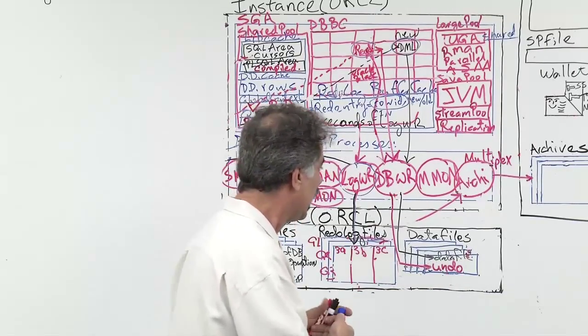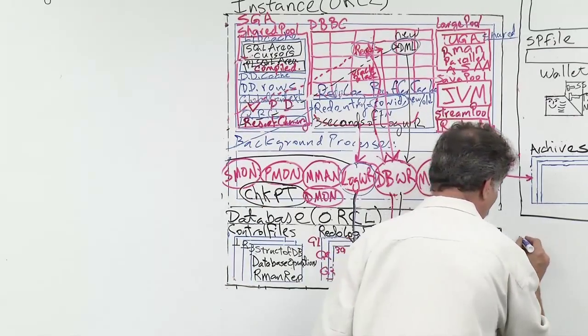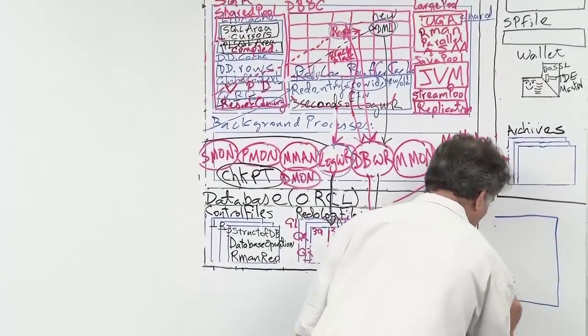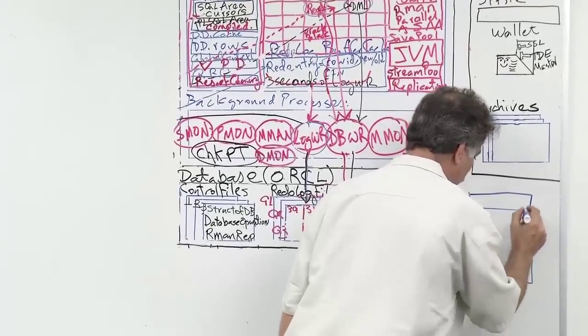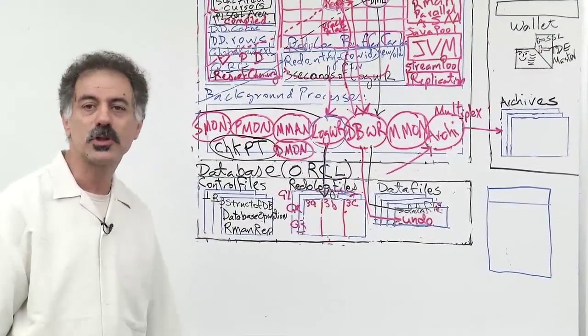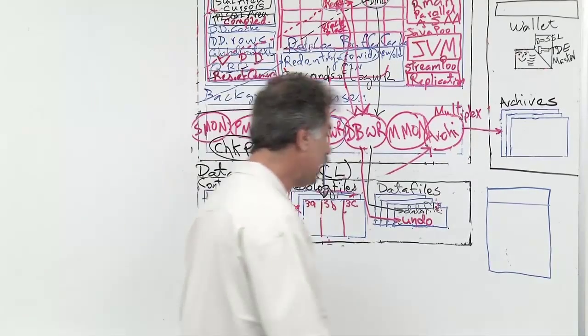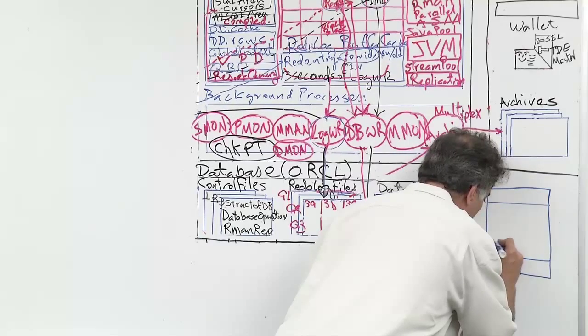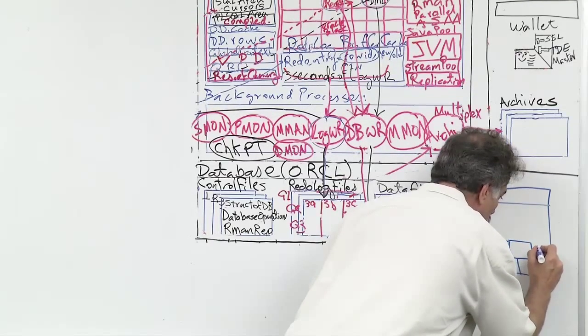If we take a look at an Oracle Block, just as an example, a block has a header and a body. It's a logical structure. In the body, we put rows. So here is row 1, row 2, row 3, row 4.